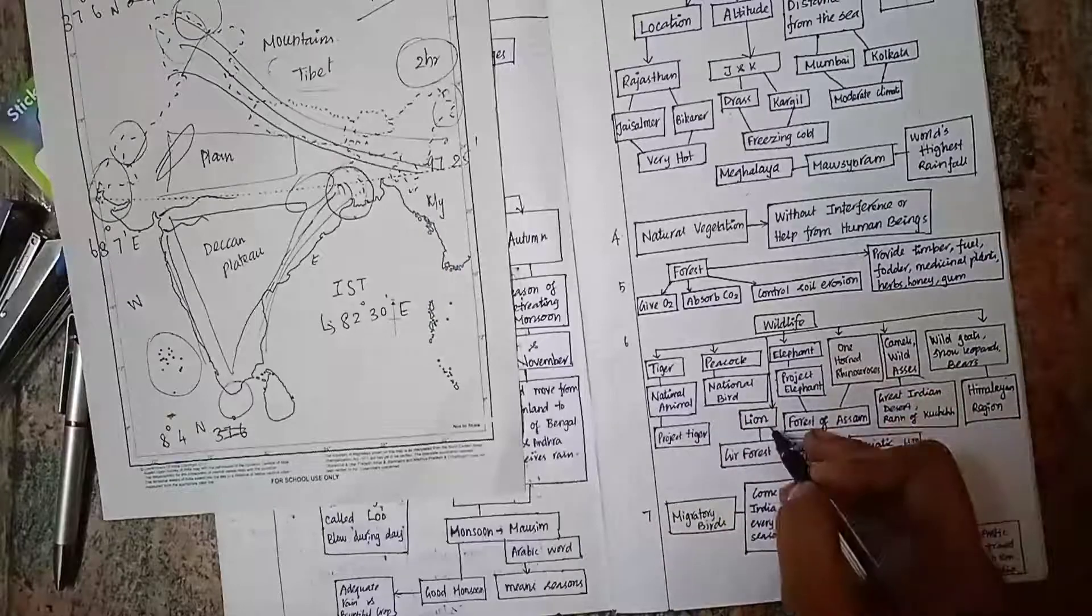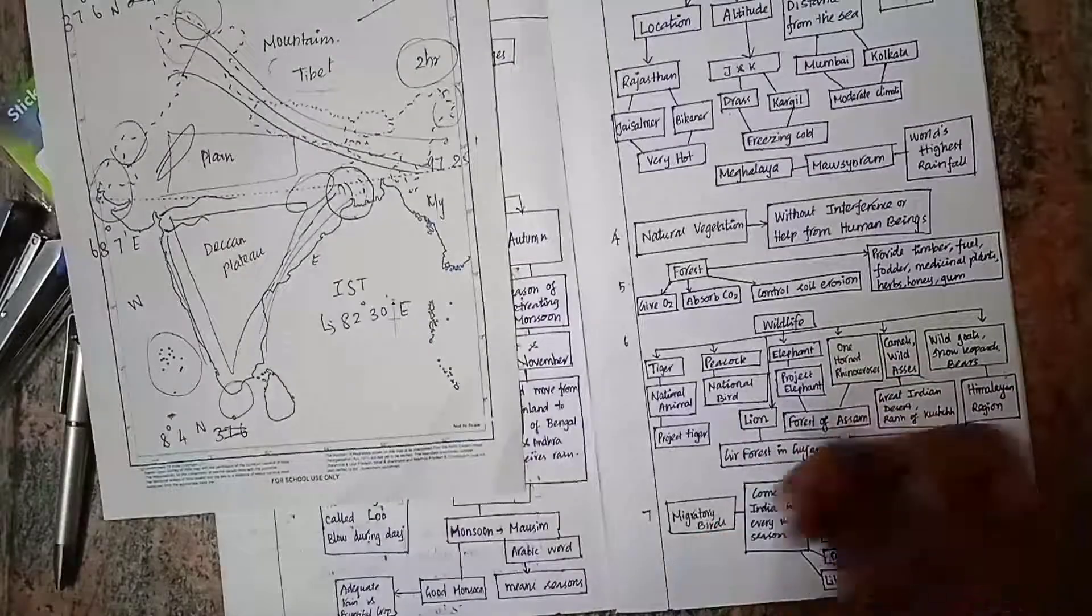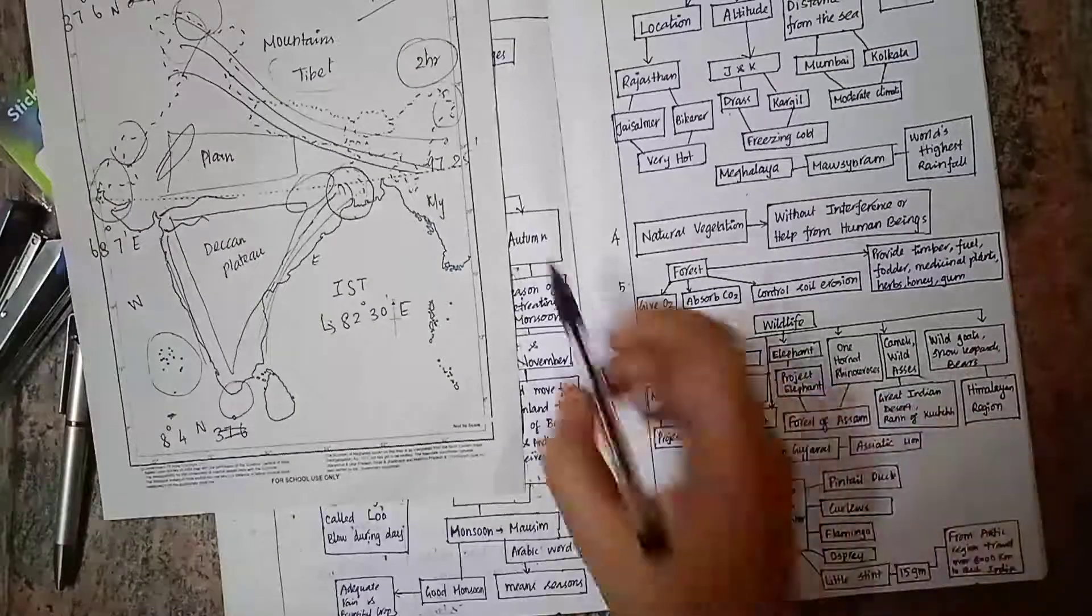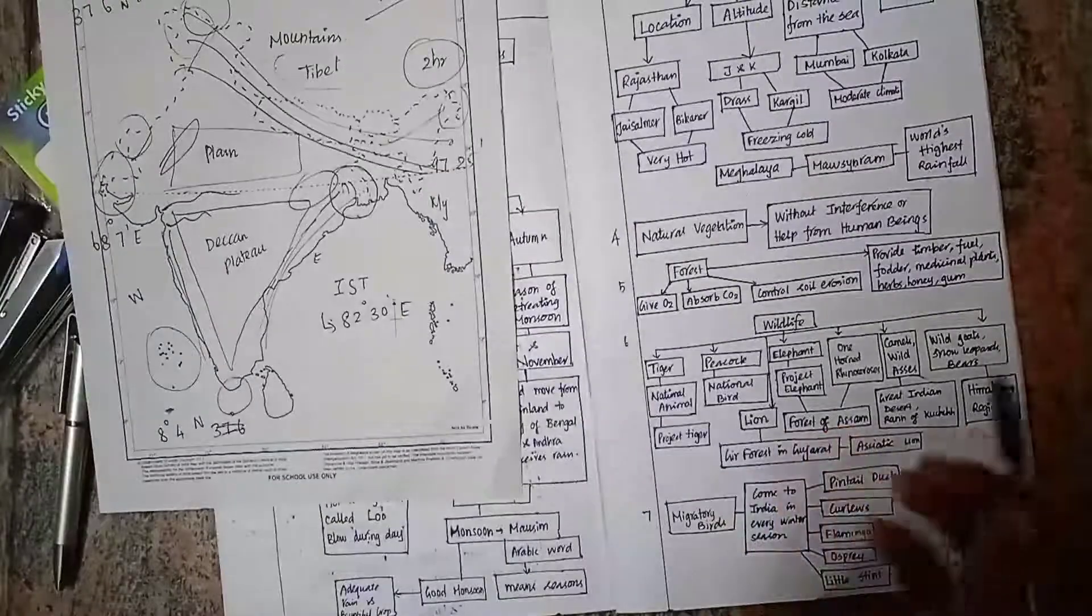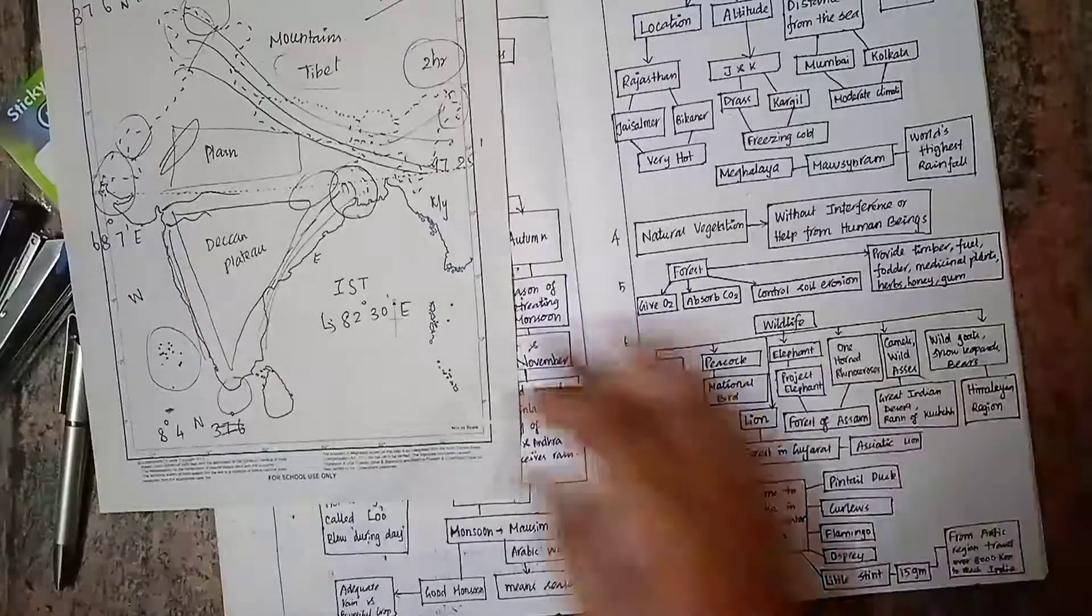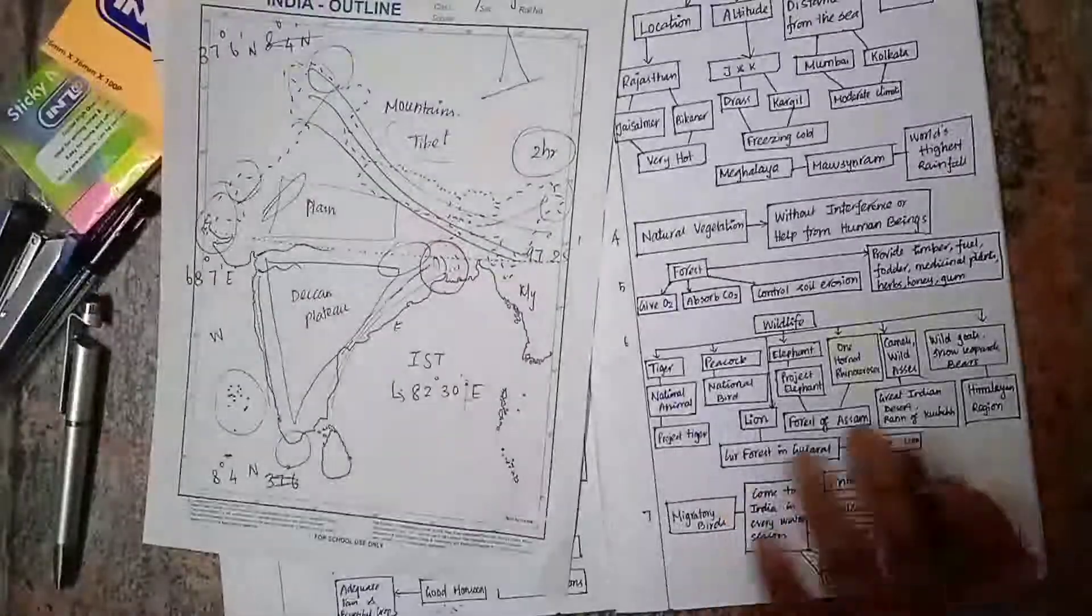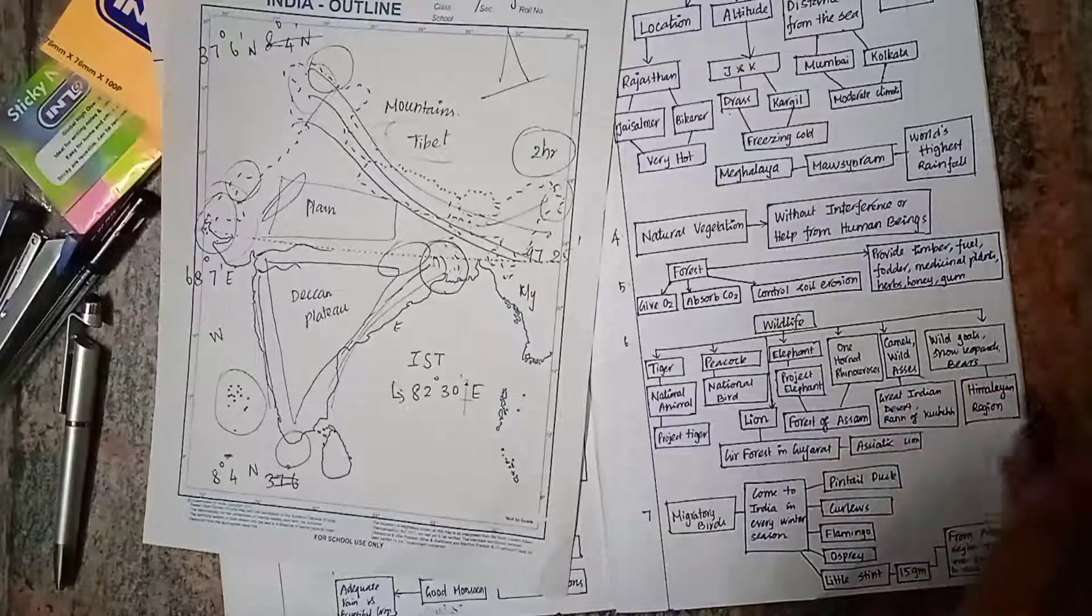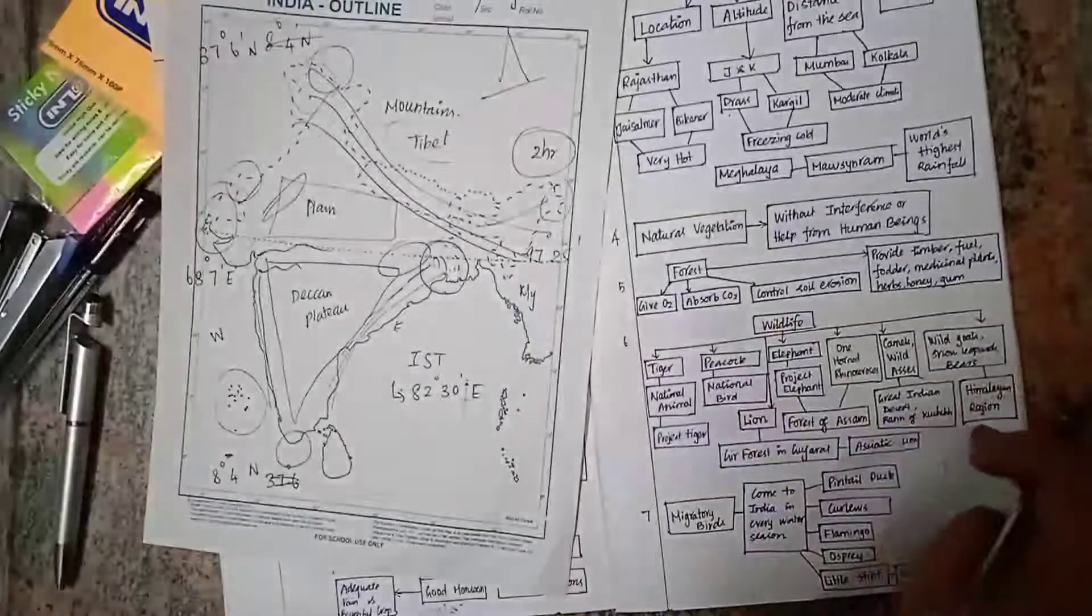We have peacock, our national bird. Lion is in Gir forest in Gujarat. We have elephant, and Project Elephant is to protect elephants. One-horned rhinoceros and elephant are present in Assam region. We have camel and wild asses in the Rann of Kutch region and in the Great Indian Desert. In the Himalayan region, we have wild goats, snow leopards, and bears.